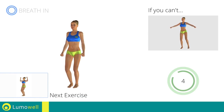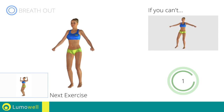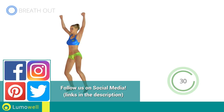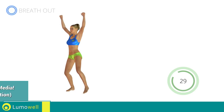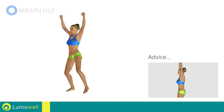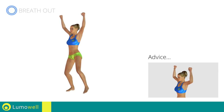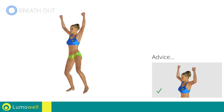Next exercise: sidestep plus shoulder press. Go! Don't arc your back — keep your abs constantly tight. Don't bend your neck; try bringing your chin back.